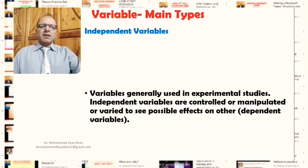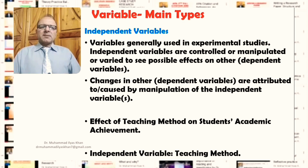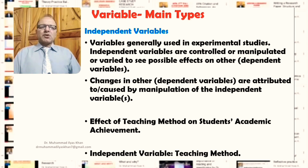The main types of variables also include independent variables. Generally, the concept of independent variables relates to experimental studies. Independent variables are basically controlled variables that are controlled or manipulated — changes are made to these variables to see their possible effects on other variables, which are the dependent variables. Changes in dependent variables are attributed to or deemed to have been caused by the manipulation of the independent variables.